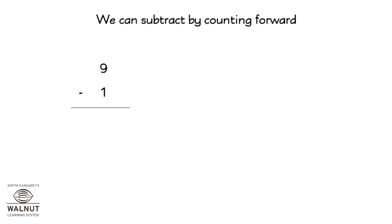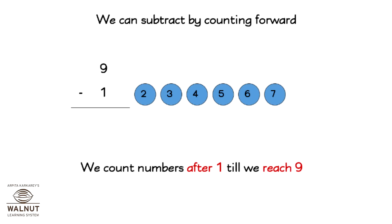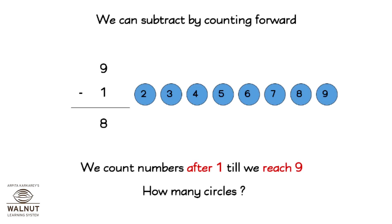Let's try another problem: 9 minus 1. We count numbers after 1 until we reach 9: 2, 3, 4, 5, 6, 7, 8, 9. How many circles? 8. So 9 minus 1 is equal to 8.